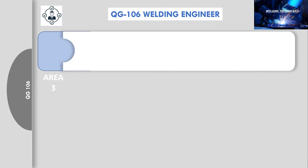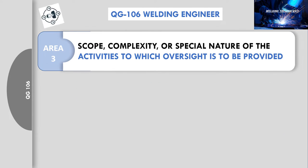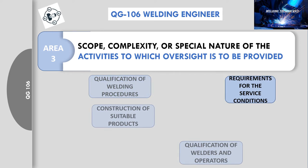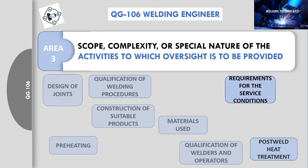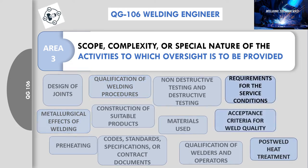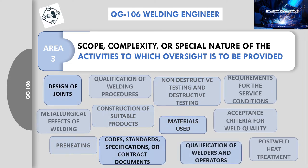Area 3 continued: the welding engineer should have knowledge about the scope, complexity, or special nature of the activities to which oversight is to be provided. You should have knowledge about Section 9, which addresses only the mandatory content of welding procedures, the qualification of those procedures, and the qualification of personnel who follow those procedures in the manufacture, fabrication, assembly, and installation of welded products. Accordingly, to ensure construction of suitable products, the requirements for service conditions, materials used, designs of joints, preheating, post-weld heat treatment, metallurgical effects of welding, acceptance criteria for weld quality, and related examination must be addressed in the codes, standards, specifications, or contract documents that invoke Section 9.